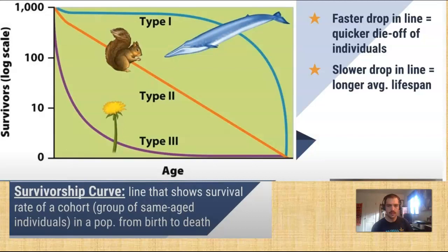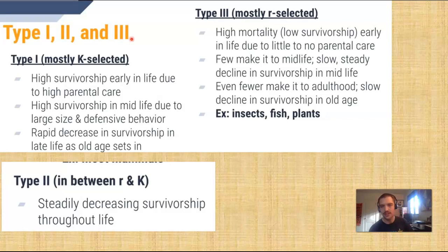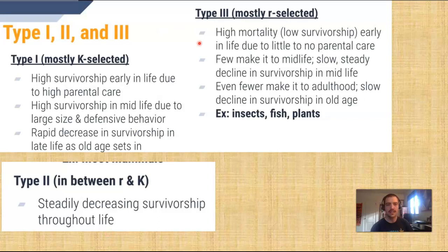Type 1, Type 2, and Type 3 survivorship curves. For Type 1: high survivorship early in life due to high parental care, high survivorship in middle life due to large size and defensive behavior, and rapid decrease in survivorship in late life as old age sets in. Type 2: steadily decreasing survivorship throughout life, like squirrels and birds. And Type 3 — like R selected insects, fish, and plants — they have high mortality or low survivorship early in life due to little to no parental care. Few make it to the middle of life, with a slow and steady decline in survivorship in the middle of life.